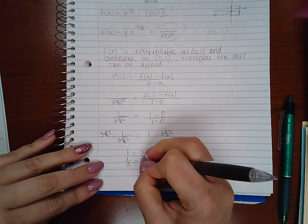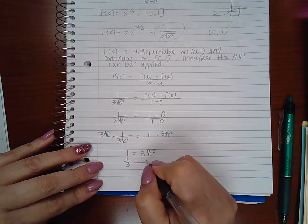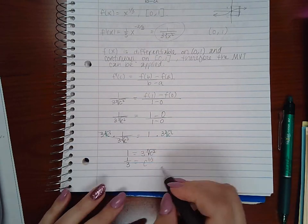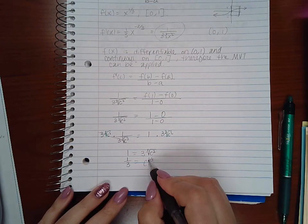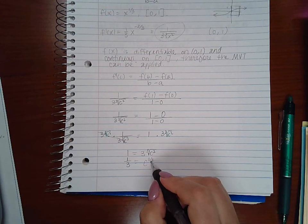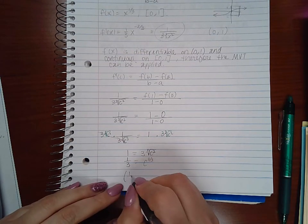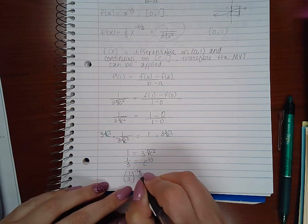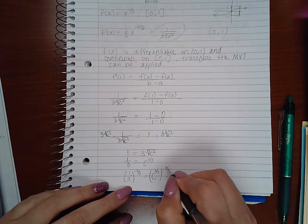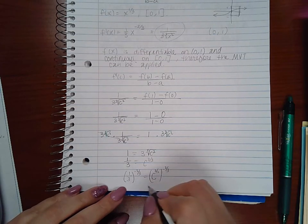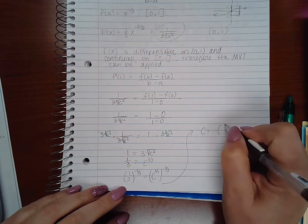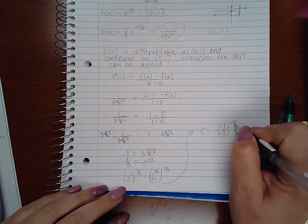And if I write that square root as an exponent, I can take the opposite of this. So I can raise this side to the negative 2/3 and raise this side to the negative 2/3, and what I end up with is that c equals 1/3 to the negative 2/3.